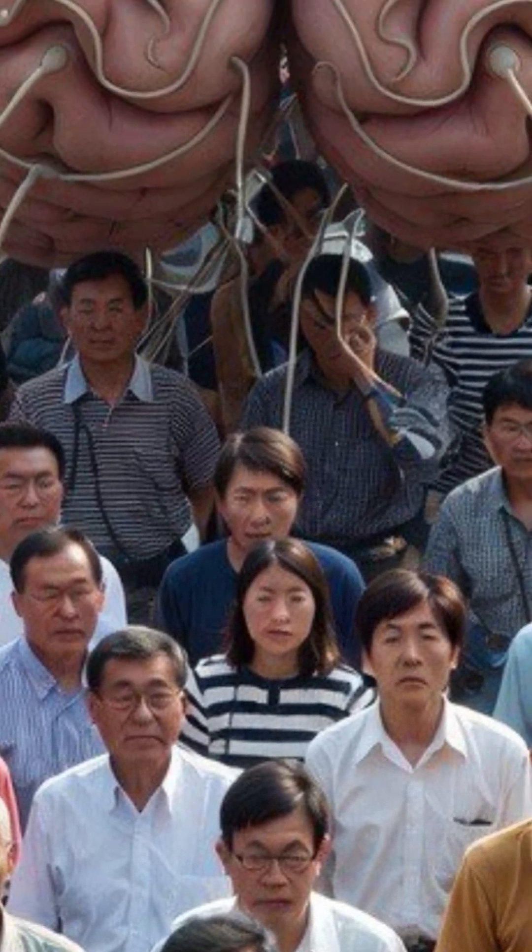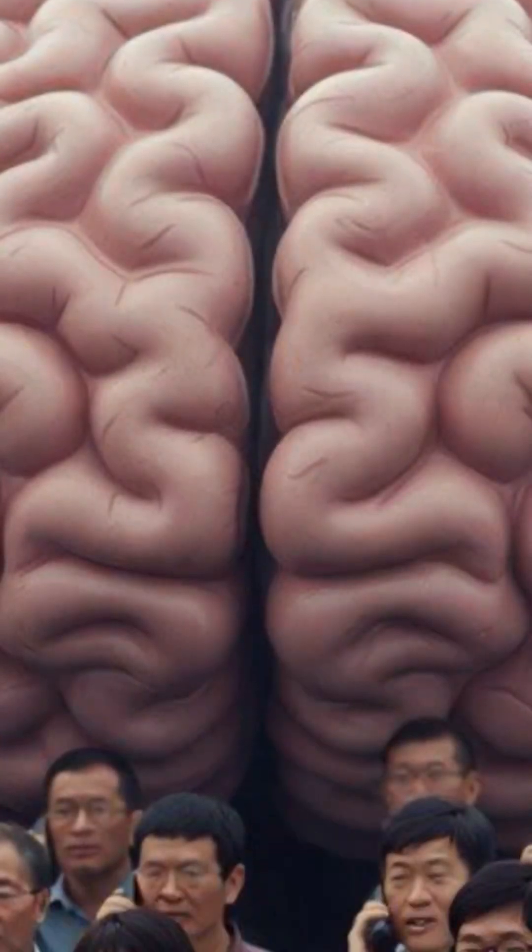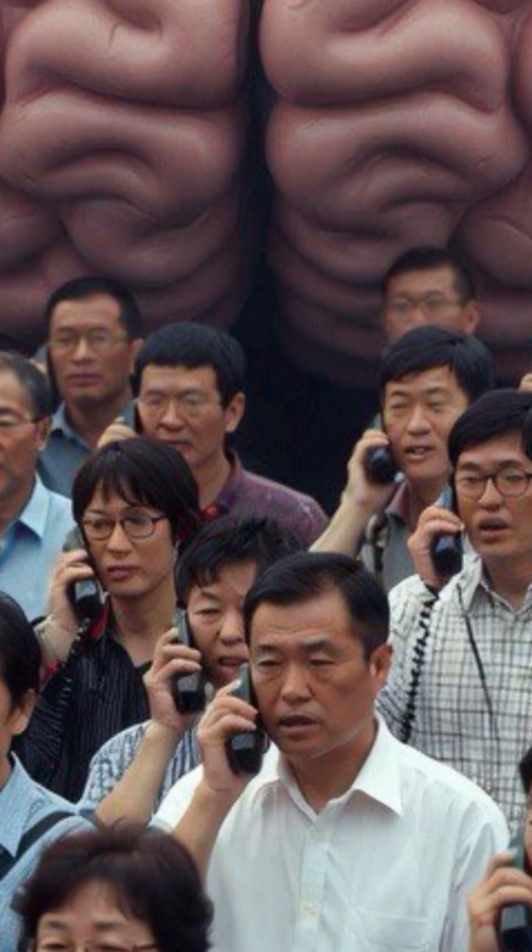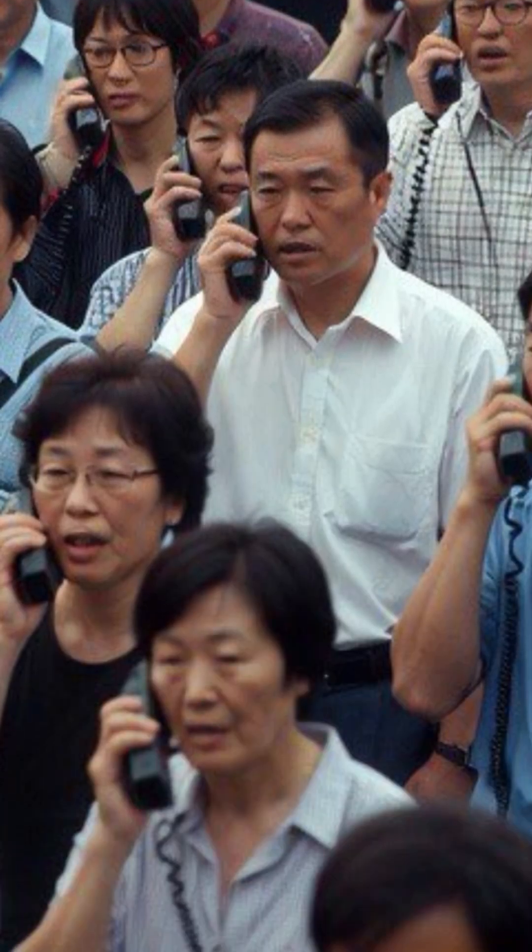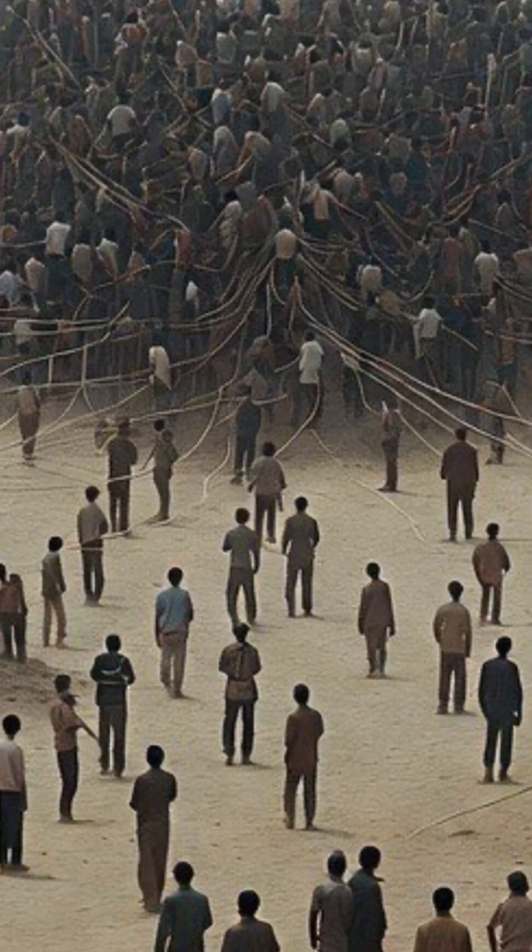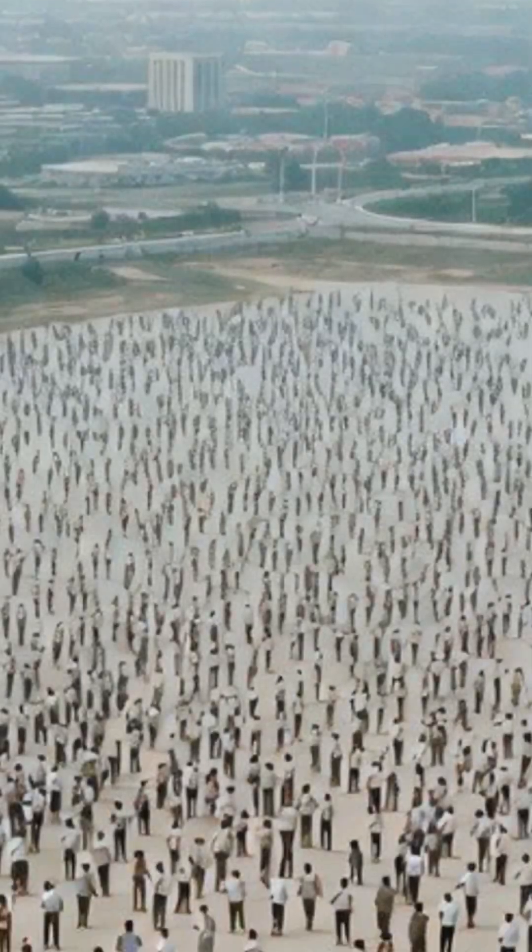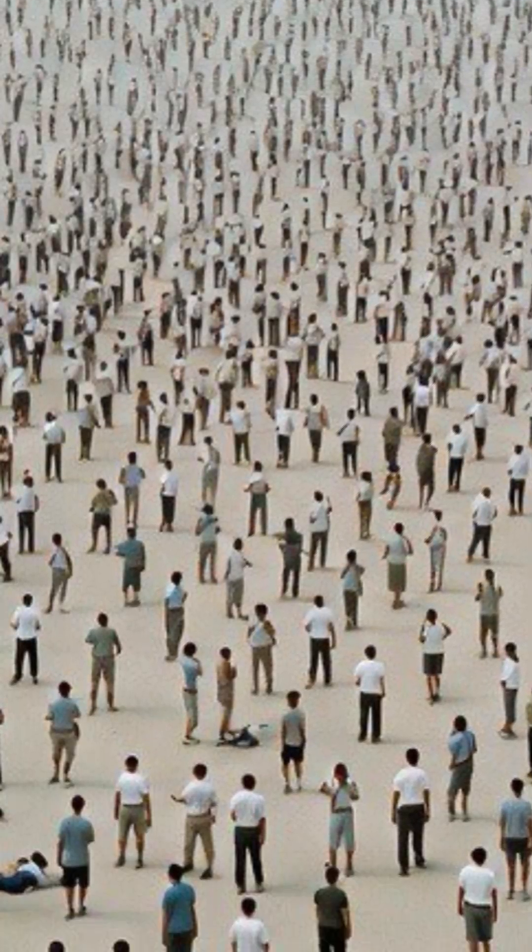Each person acts as an individual neuron, communicating with others via two-way radio or telephone to simulate synaptic firing and signal transmission. The system receives sensory inputs, processes information according to neural network rules, and generates motor outputs.